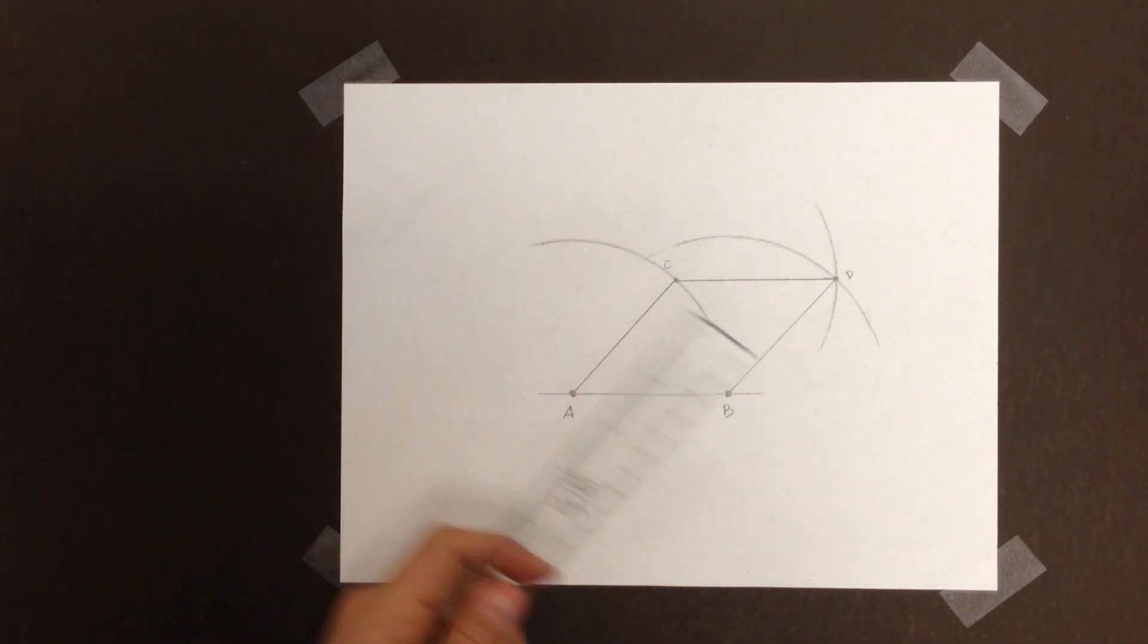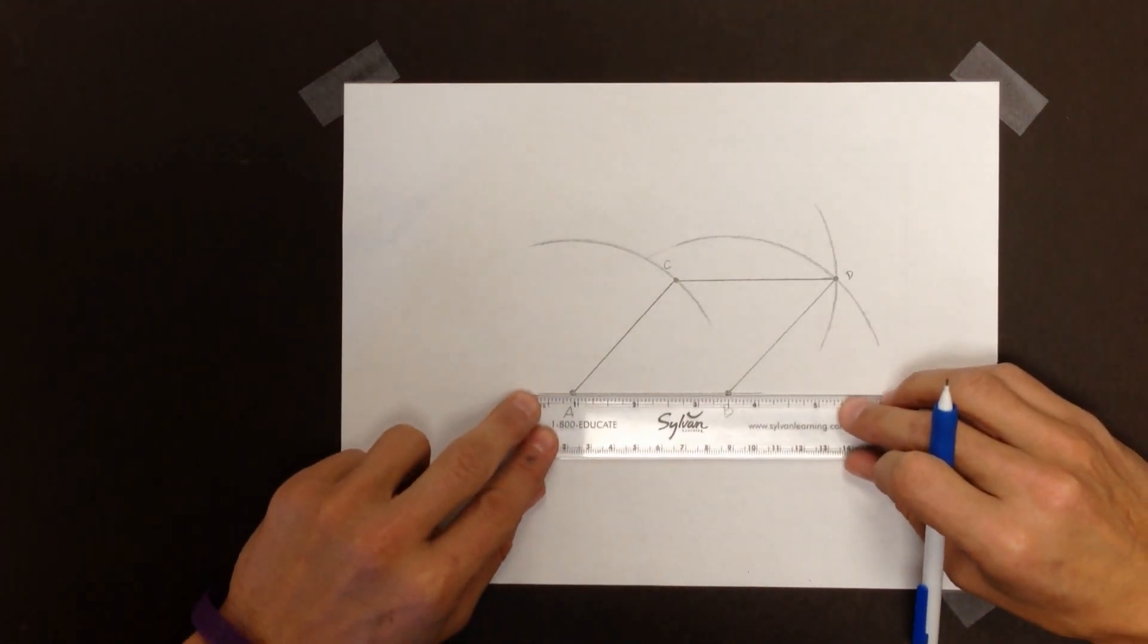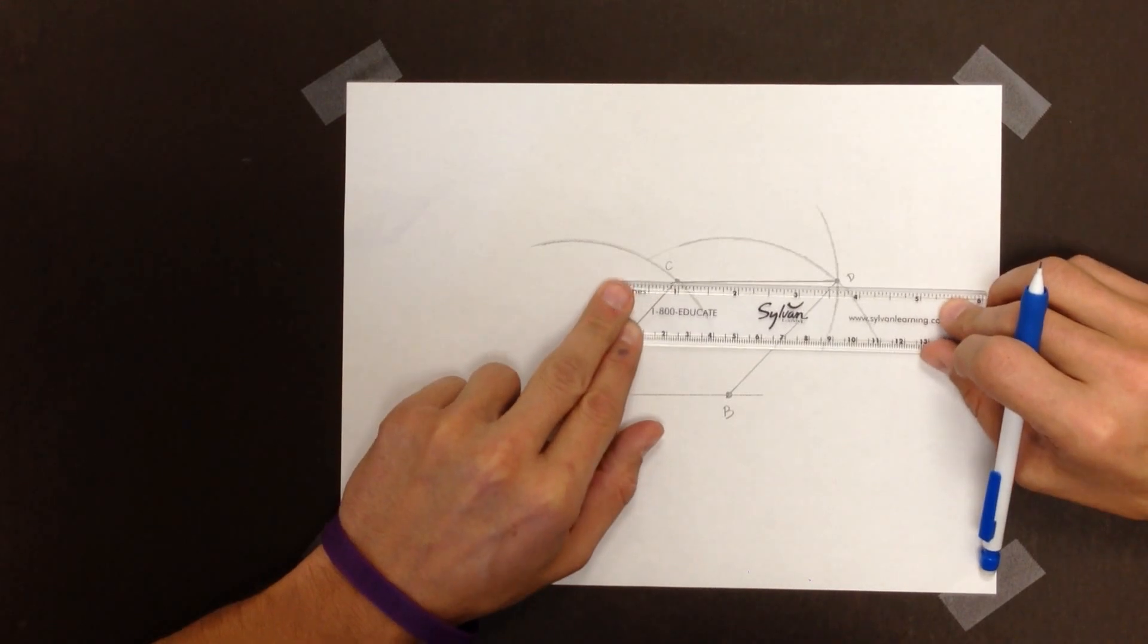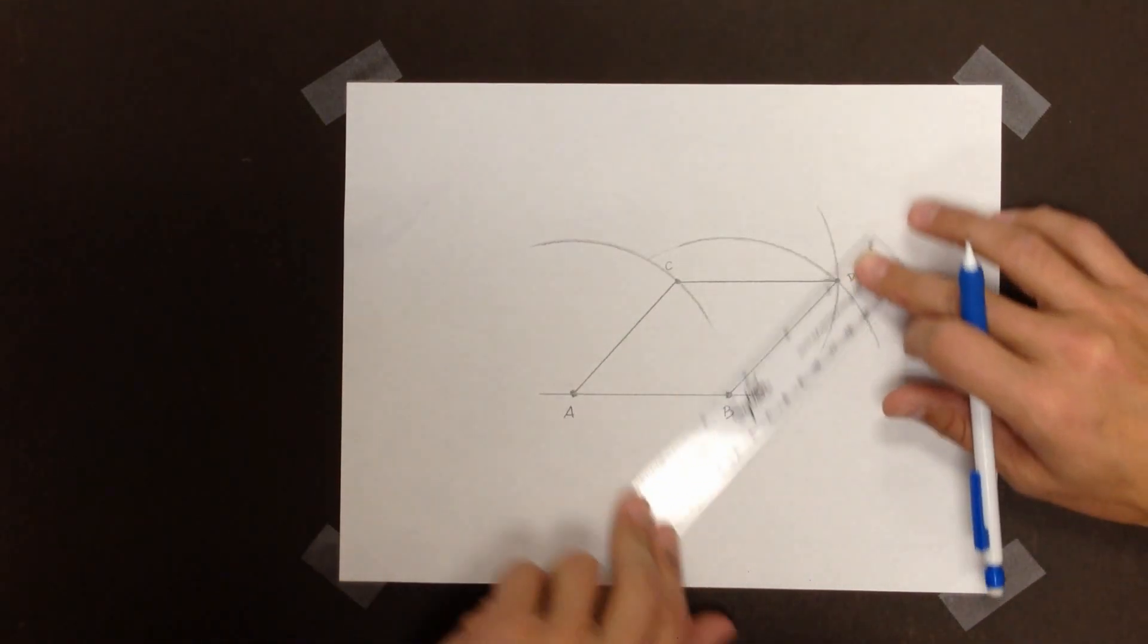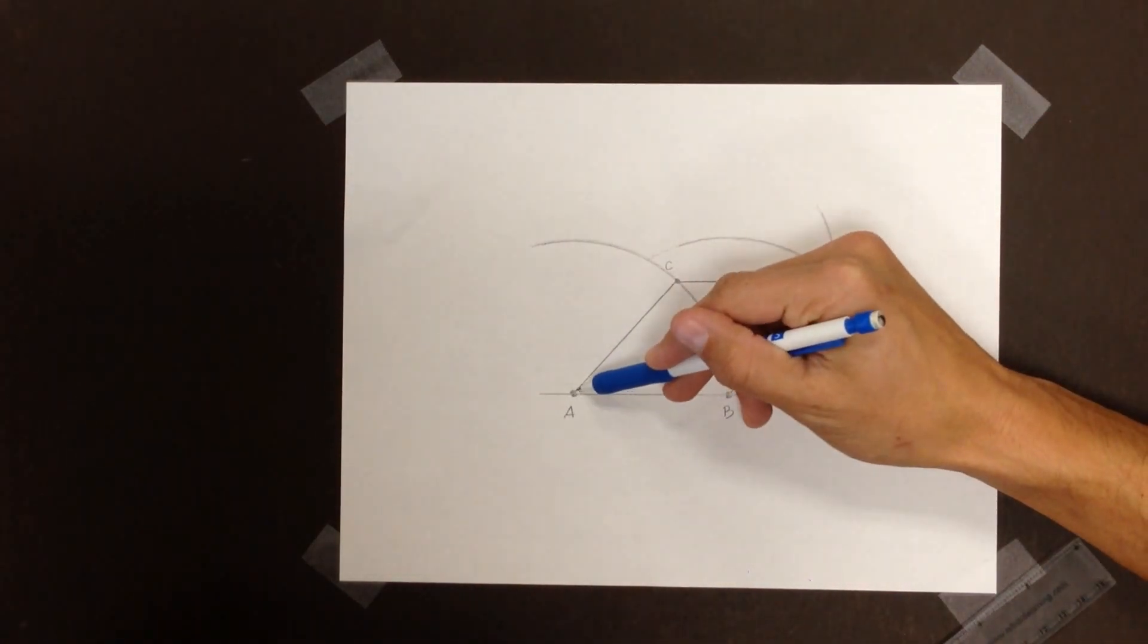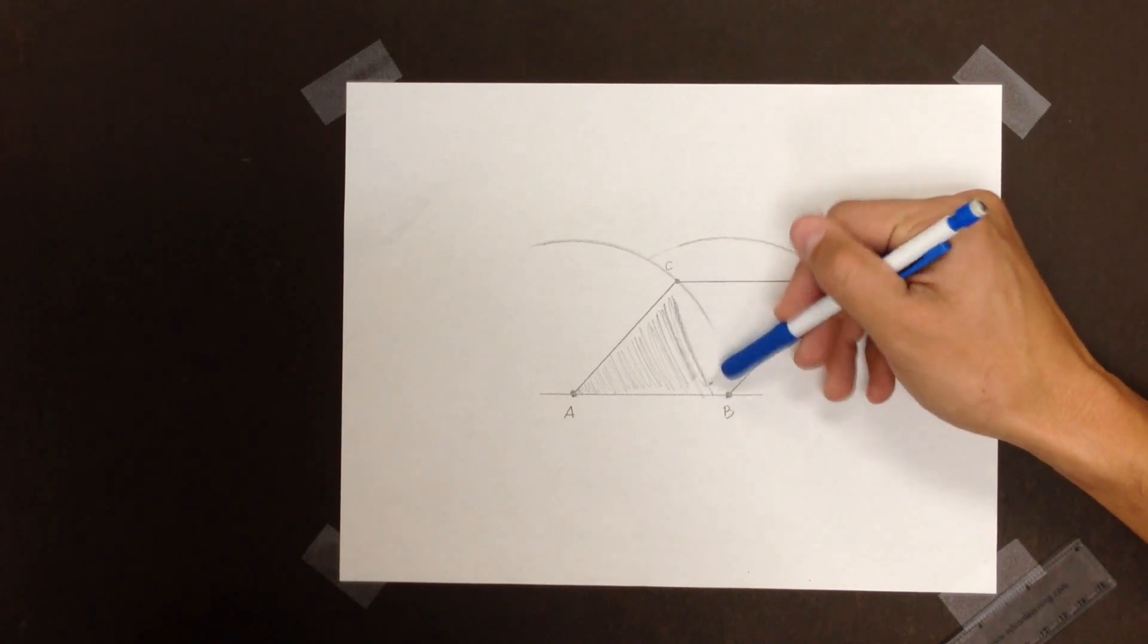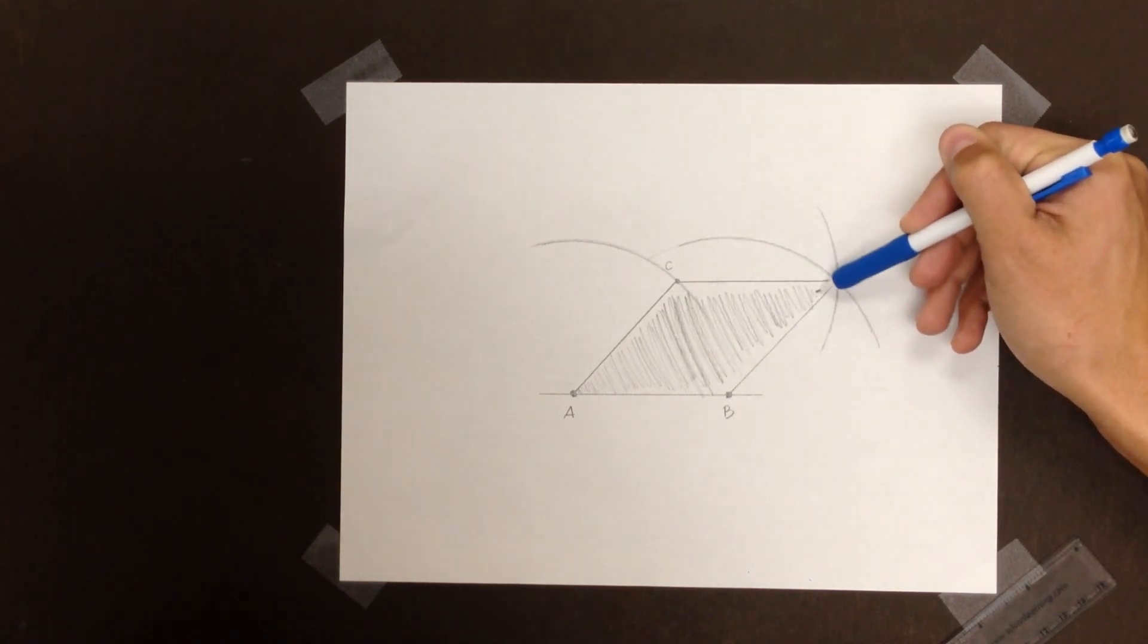If I bust out my handy ruler here, I'll say that one is about two and a half inches, give or take. That one sure looks like it's two and a half inches, give or take. Maybe a little bit longer, maybe it wasn't perfect, but it was darn close. About two and a half inches. And I have created a parallelogram that has side lengths that are all congruent, which is also known as a rhombus.